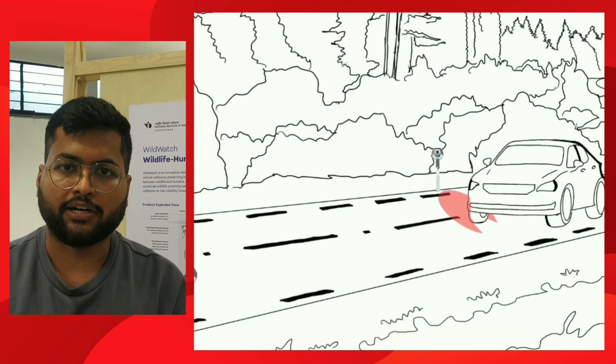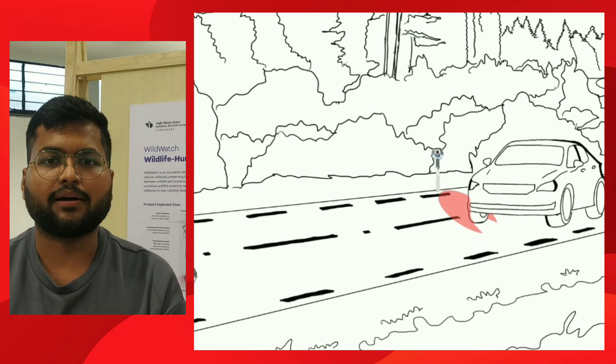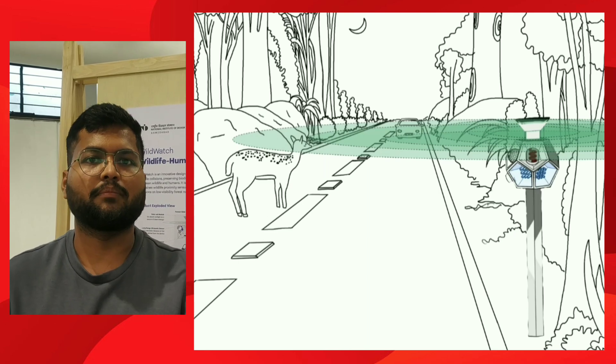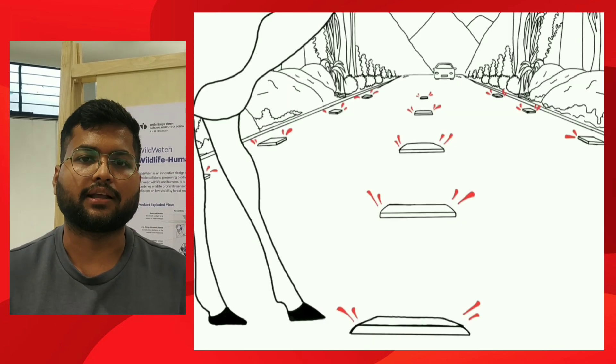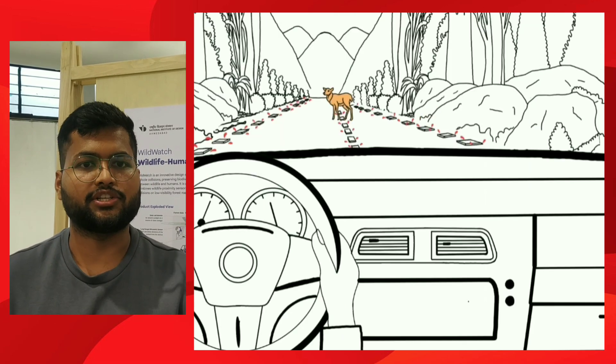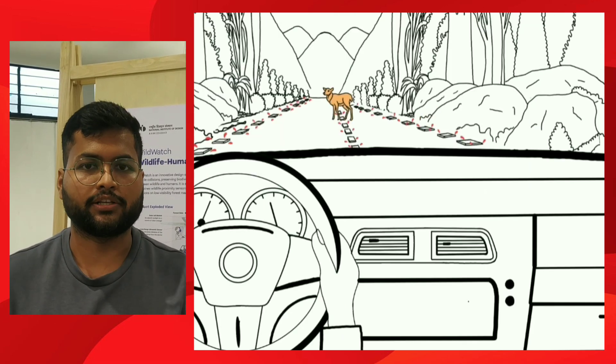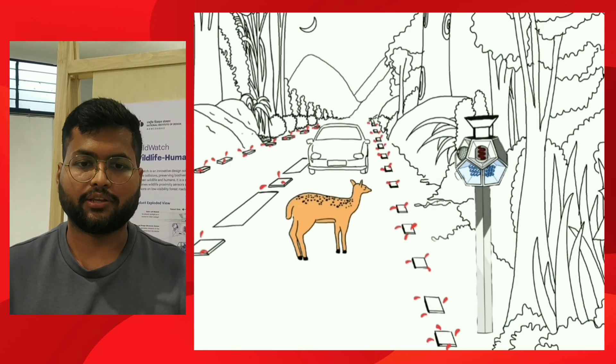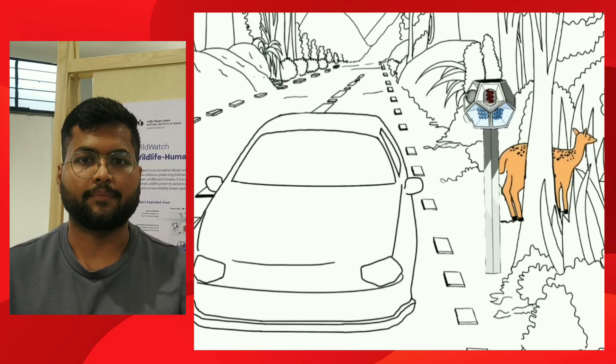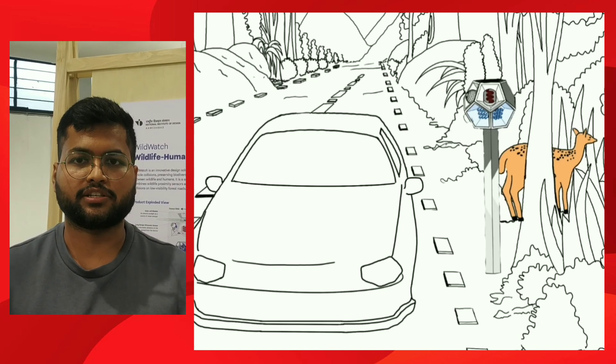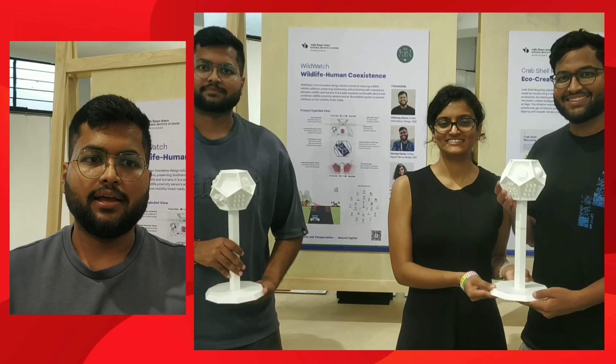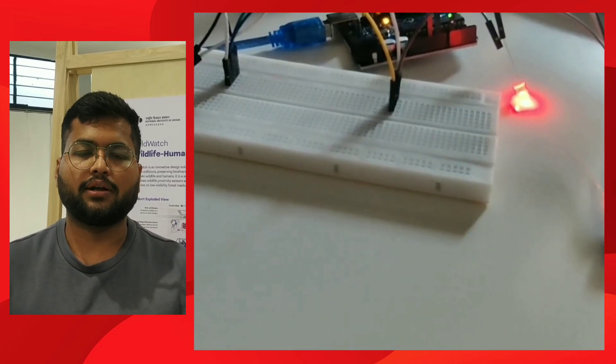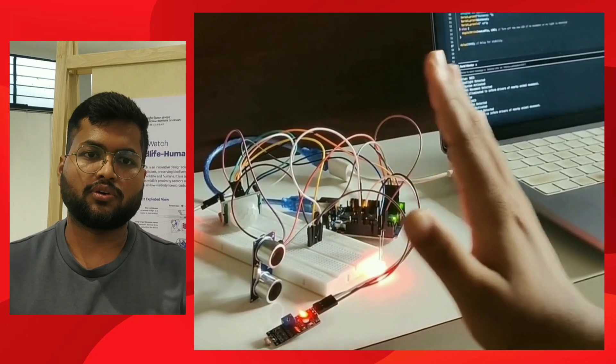How do we work on this product? Wild Watch is a tangible product for areas where wildlife-vehicle collisions happen, particularly jungle roads or forest roads where there's not much light. As India is in infrastructure development mode, expanding roads into jungle areas, we've made a product to tackle this challenge.